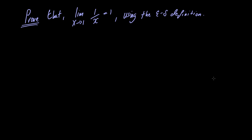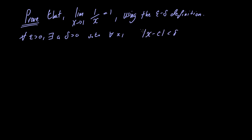The statement we want to prove is the following: for all epsilon greater than 0, there exists a delta greater than 0 such that for all x, if the absolute value of x minus c is less than delta and greater than 0, then the absolute value of f of x minus L is less than epsilon. In our example, c is equal to 1, f of x is equal to 1 over x, and L is equal to 1.